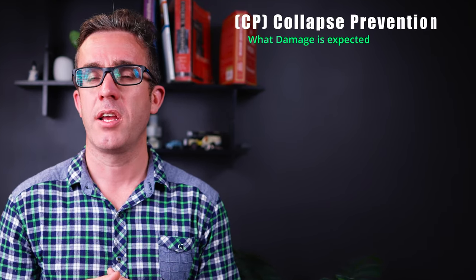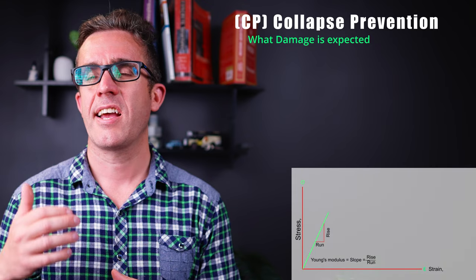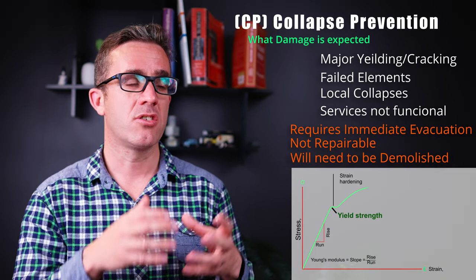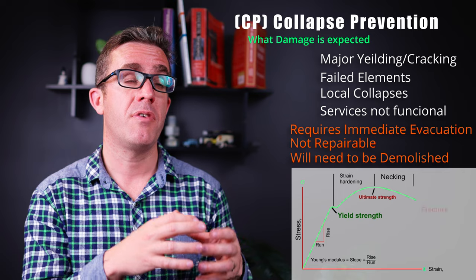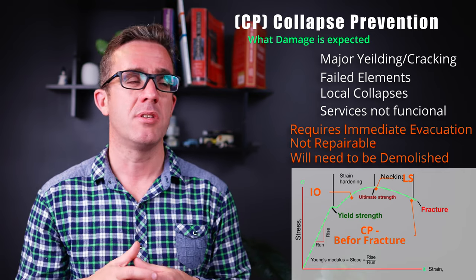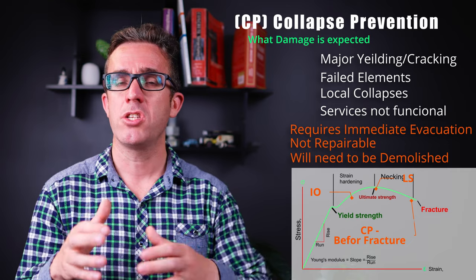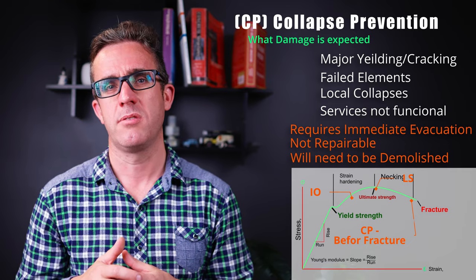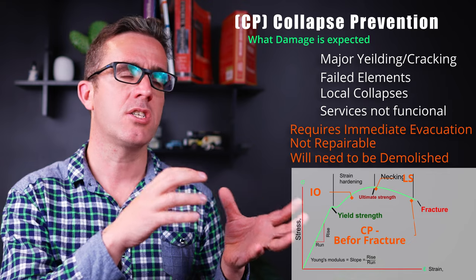The last and final stage that FEMA gives a classification for is that collapse prevention. So, the building has not collapsed at this point, but it's suffered significant damage. So, it has major deformations in specific elements. It needs immediate evacuation. So, you need to leave the building structure as fast as possible. So, it's had significant reduction in strength.